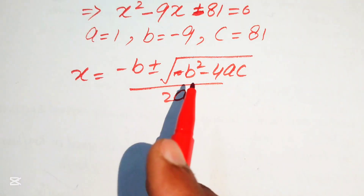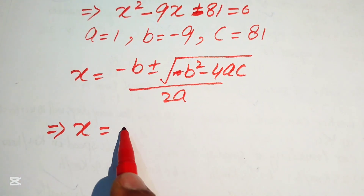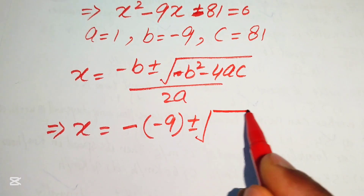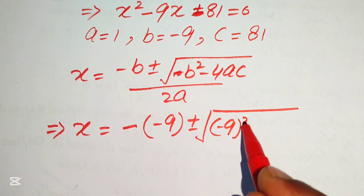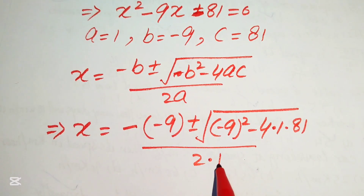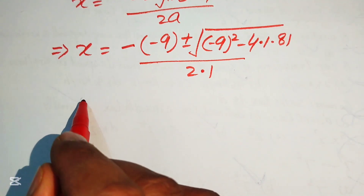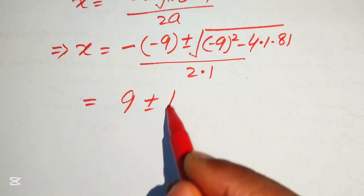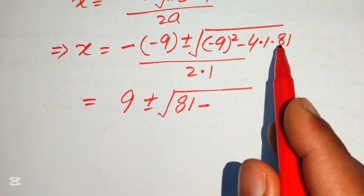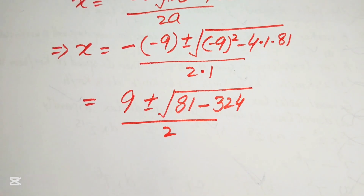Substituting the values of a, b, and c: this gives x equals minus of minus 9, which is plus 9, plus or minus the square root of minus 9 squared minus 4 times 1 times 81, divided by 2 times 1. That is 9 plus or minus the square root of 81 minus 324, divided by 2.